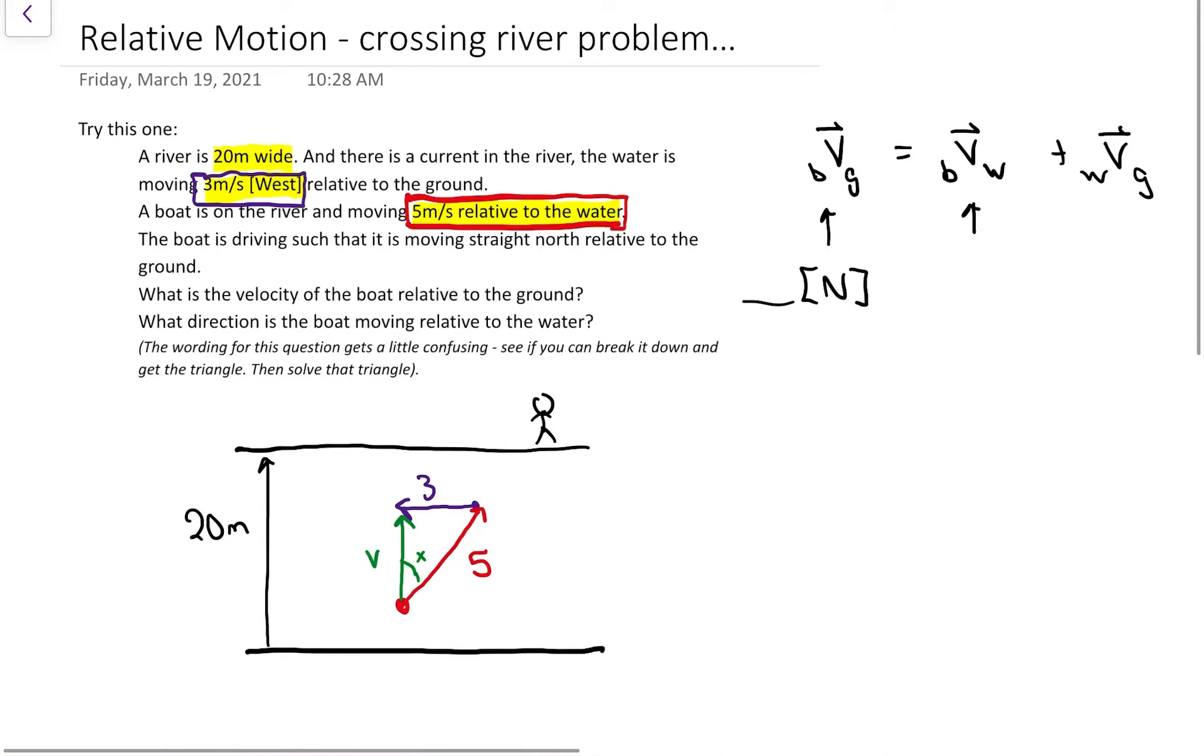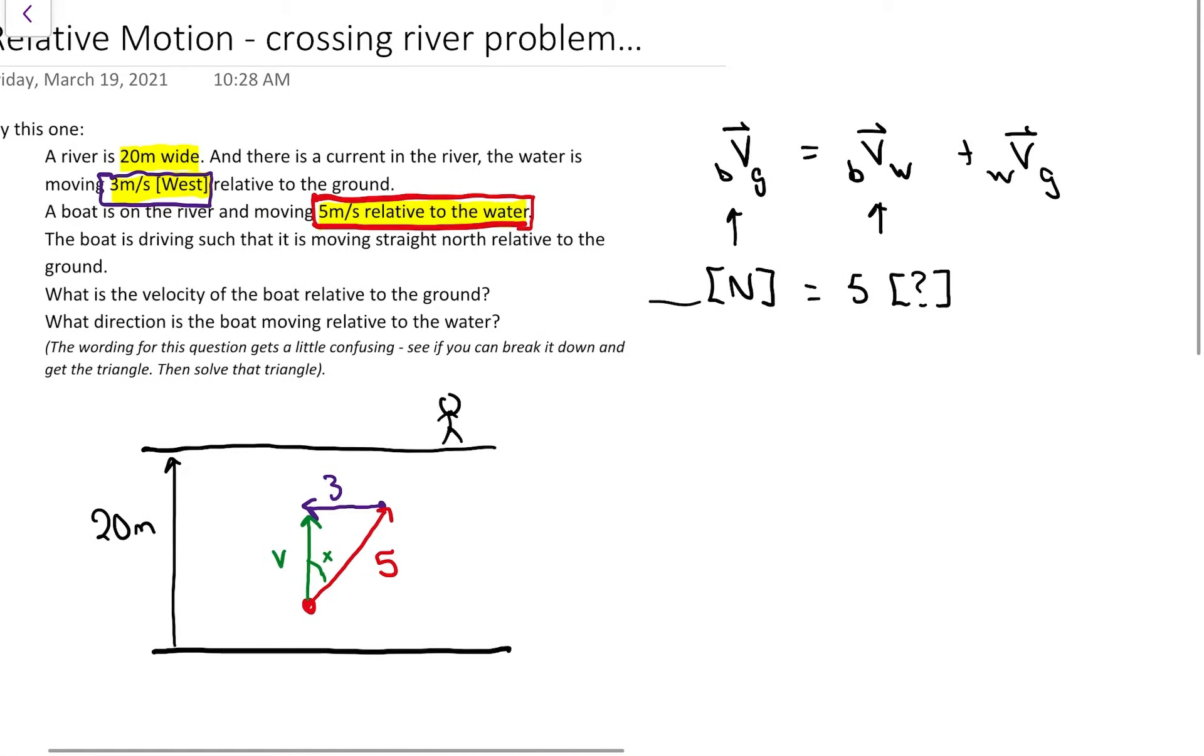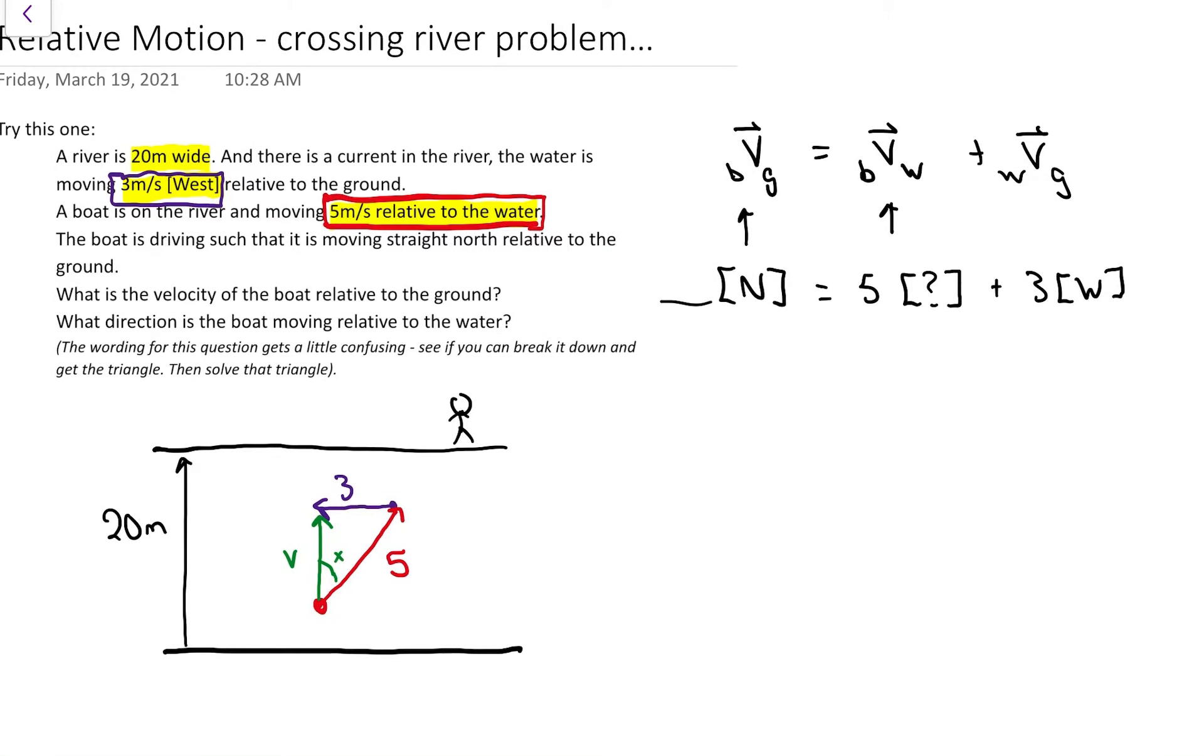I know everything about the boat moving over the water. I know that it's going at 5, but I don't know the direction. And I know everything about the current. I know that it's 3 to the west. So what makes this type of question a little bit weirder is my unknowns are split up.